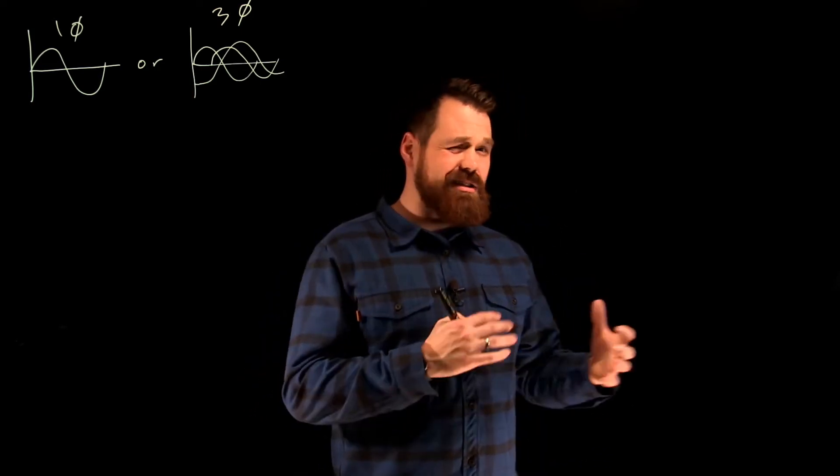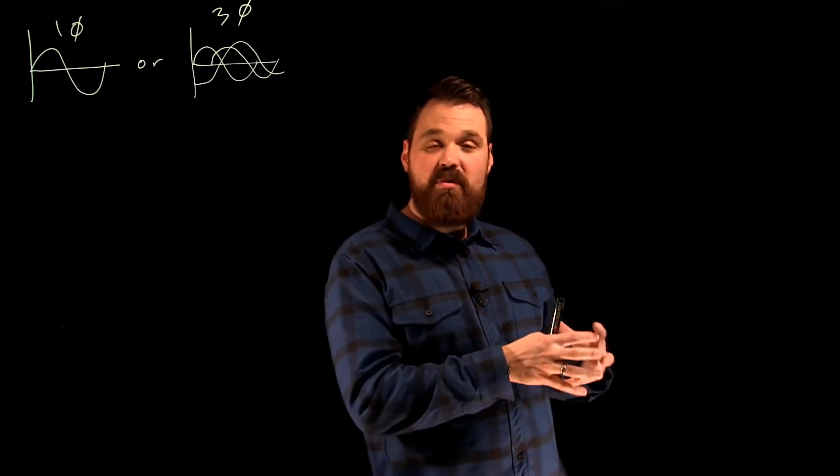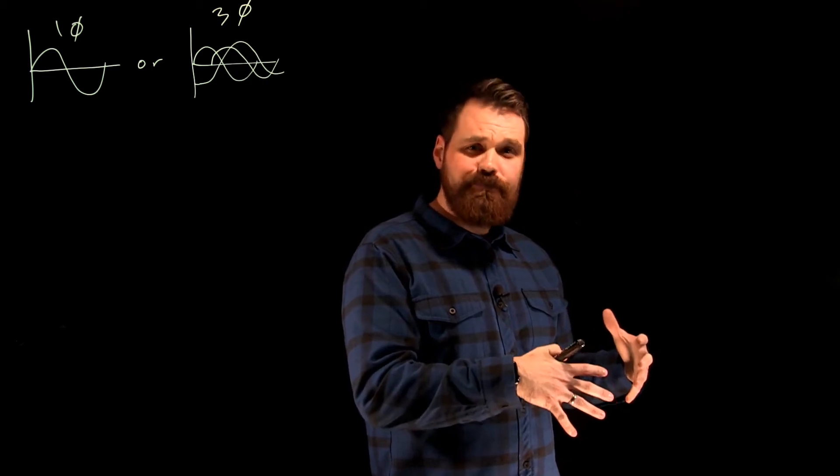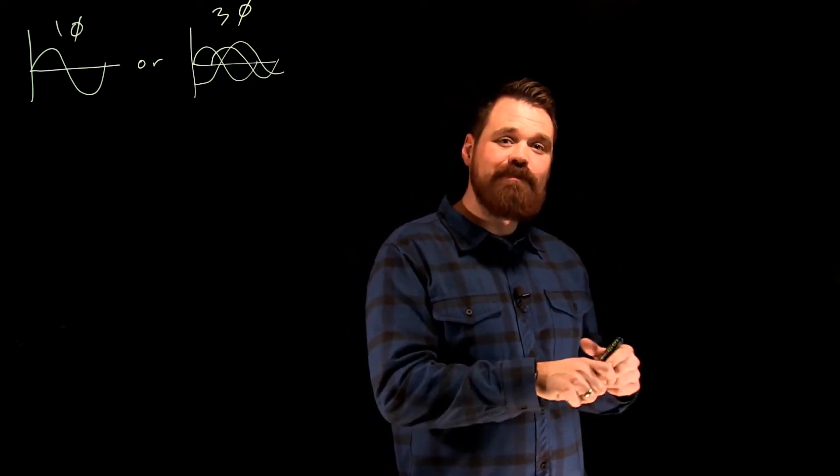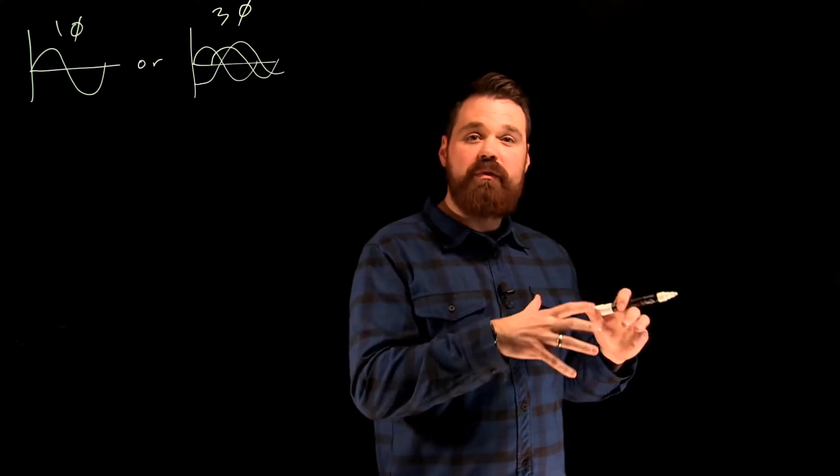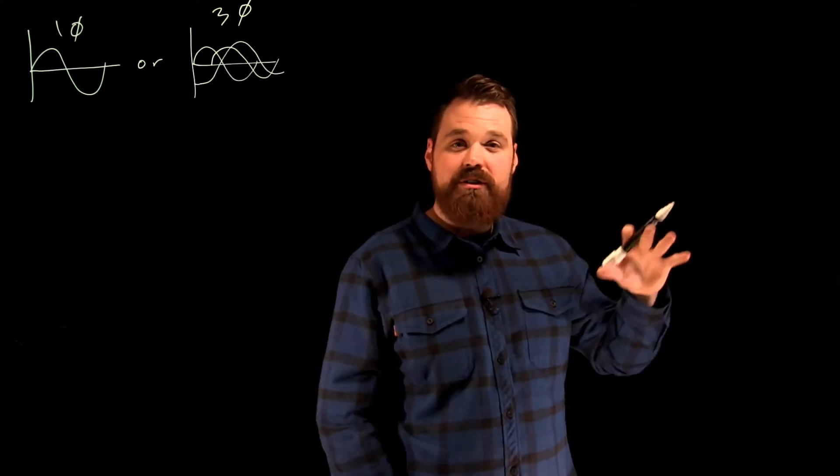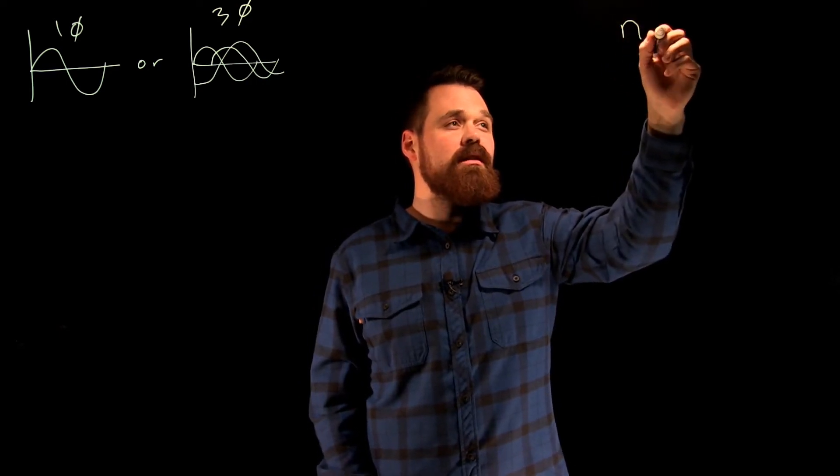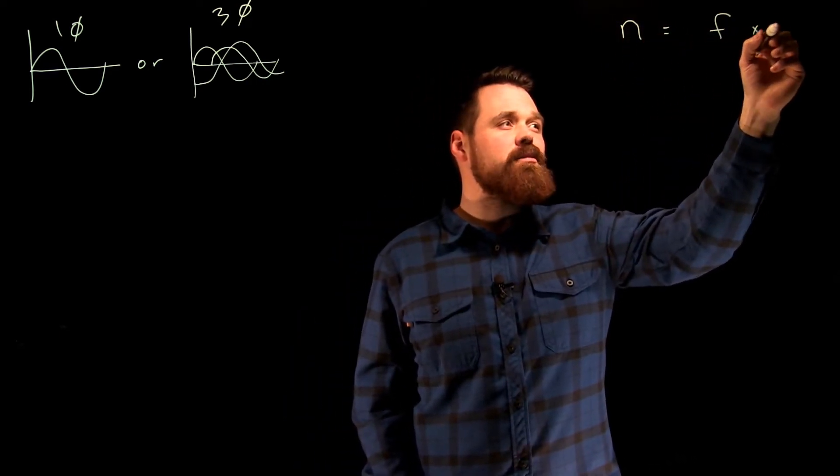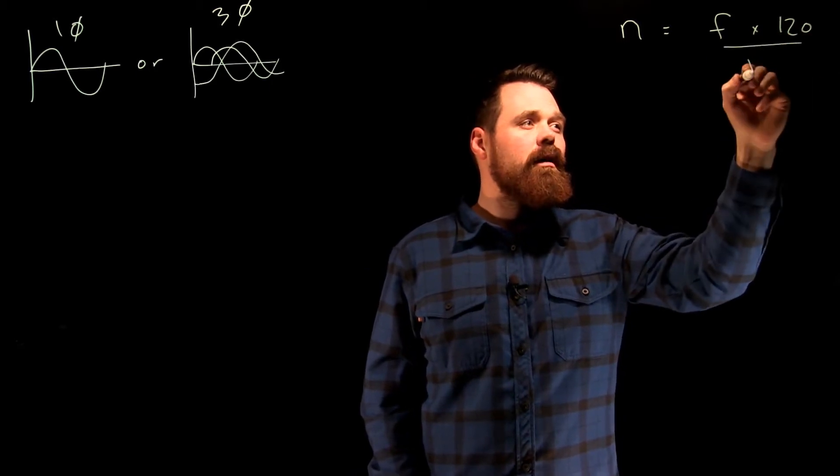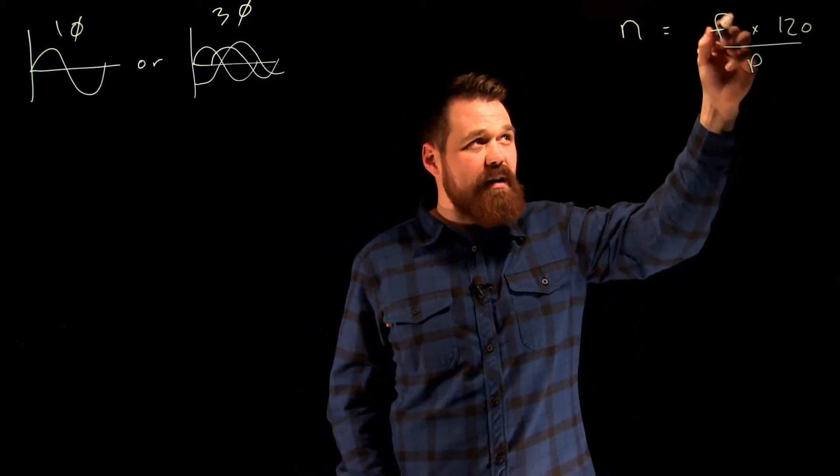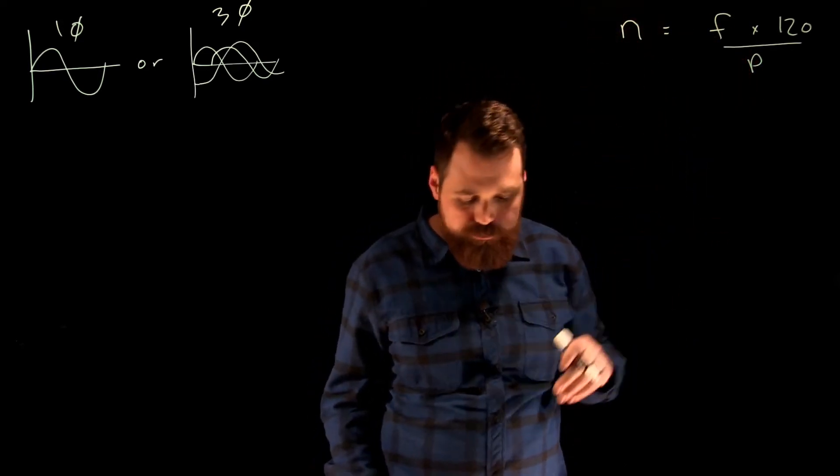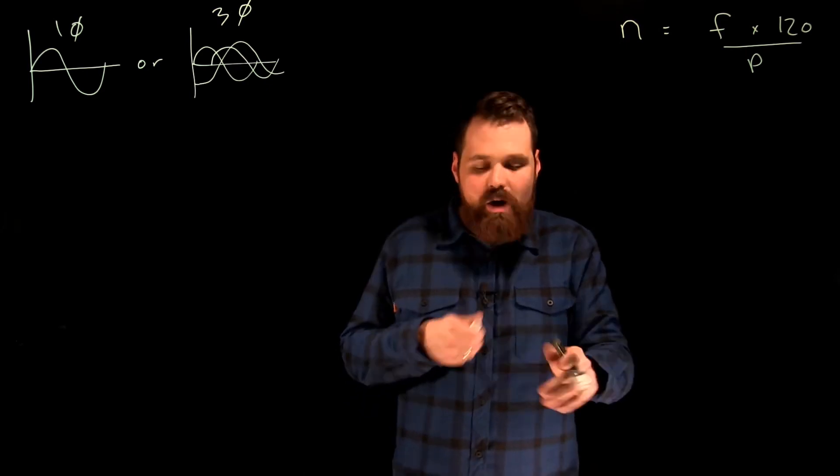It's not practical to change the number of poles inside a motor to get variable speed. So we use our frequency formula: frequency equals poles times speed over 120. By varying this frequency, we can easily change that synchronous speed of the motor.